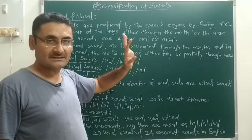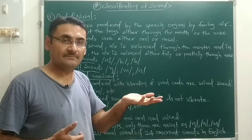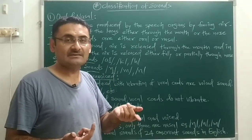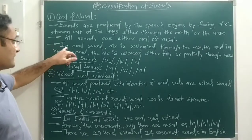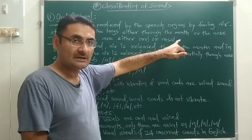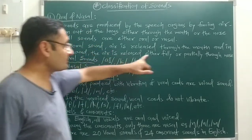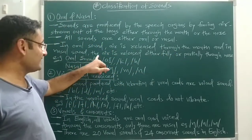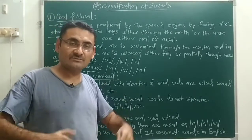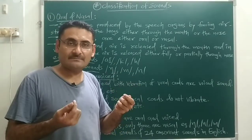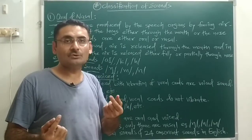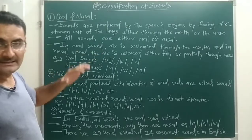All sounds are either oral or nasal. The sound that you produce by forcing the air stream from your lungs towards your nose is a nasal sound, and if you release the air stream from your mouth, that is your oral sound. In an oral sound, the lungs force the air stream and it is released from your mouth. In a nasal sound, the air stream is released fully or partially from your nose.